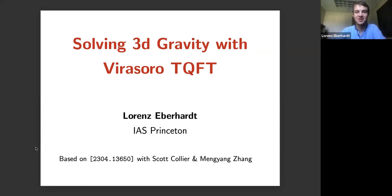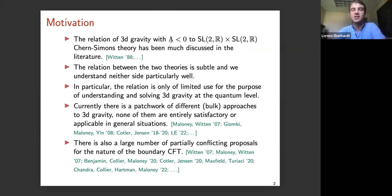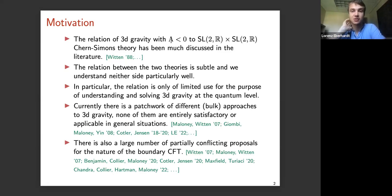Hopefully at some point there will also be a second paper appearing. Let's start by reviewing some vague laws that exist in 3D quantum gravity. I'll always be talking about 3D gravity with negative cosmological constant, so AdS3 gravity. There is a relation between 3D gravity and two copies of SL(2,R) Chern-Simons theory, but this relation is a little bit vague. Neither side is well understood — we don't understand 3D gravity, we don't understand SL(2,R) Chern-Simons theory, and we don't understand the relation very well either.